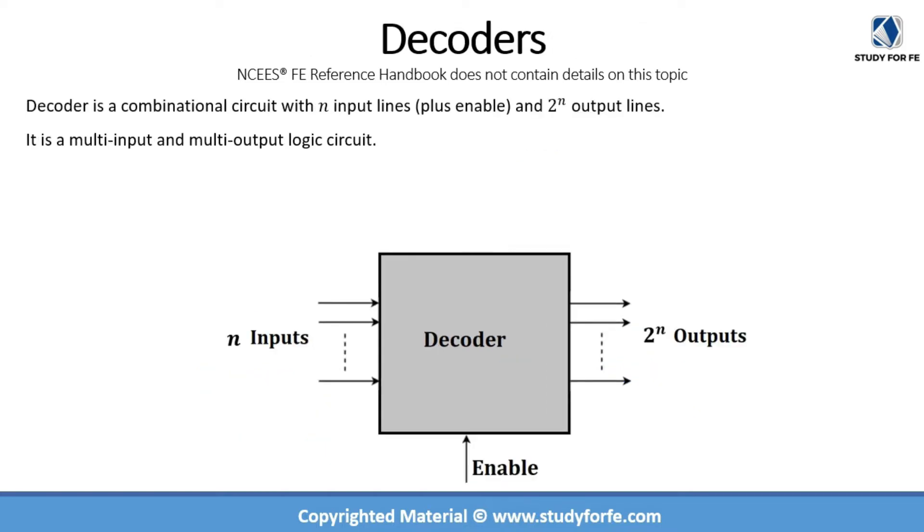So the first combinational circuit that we are going to review is decoder. Decoder is a combinational circuit with n input lines plus enable. So enable will basically turn on or off the decoder, and the decoder with n inputs will have two raised to power n output lines. It is a multi-input and multi-output logic circuit. In this lecture, we are going to discuss 2 to 4 decoder and 3 to 8 decoder.